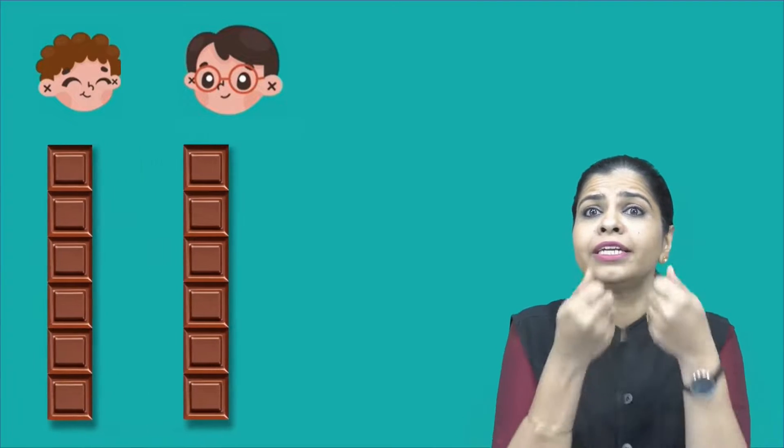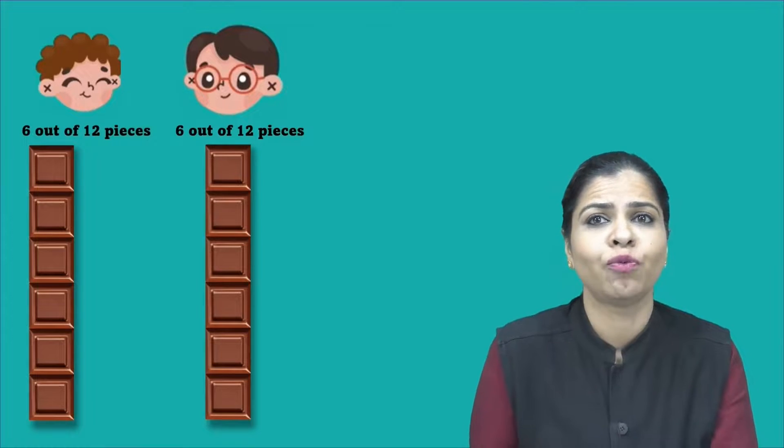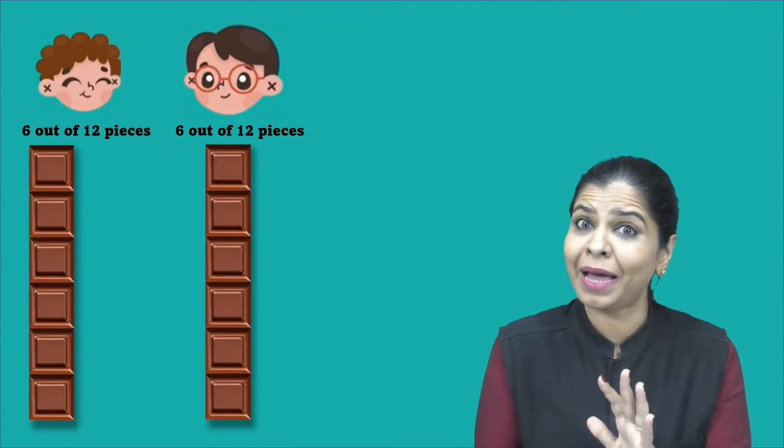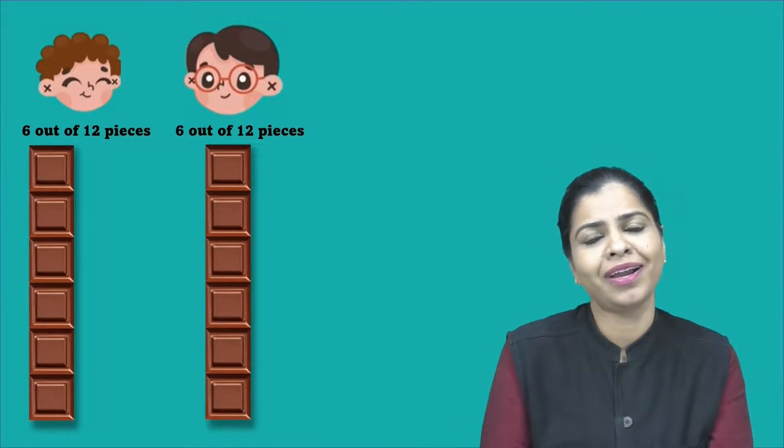The story is about Chintu who has sneaked the chocolate into the classroom and when he's just about to enjoy, Pinto catches him. Now he has to share this chocolate with Pinto too, but he's okay with it. So what do they do? They break this chocolate into two equal parts and each gets six out of twelve pieces.